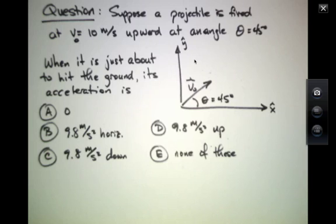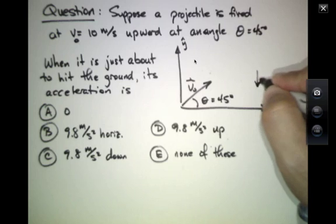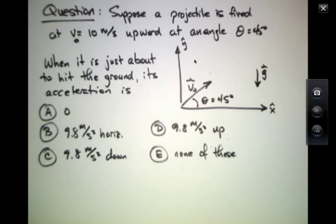Well, consider that this is a case where gravity is pointing straight down. There's an acceleration of little g, equal to 9.8 meters per second squared in magnitude. It's always pointing down.